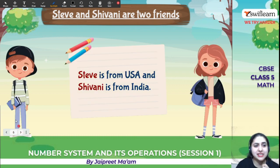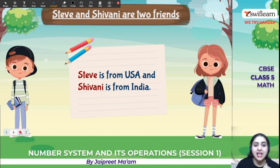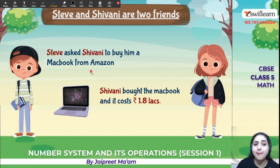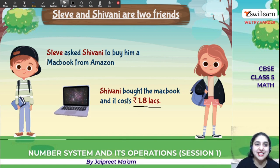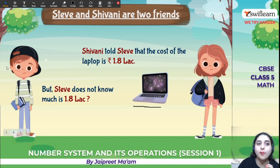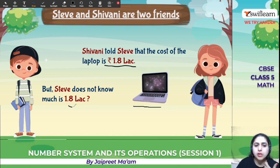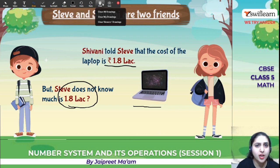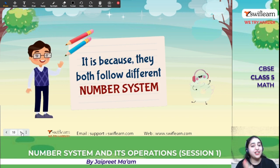There are two friends — Steve and Shivani. Steve is from USA and Shivani is from India. Steve asked Shivani to buy him a MacBook from Amazon. Shivani bought the MacBook and its cost is rupees 1.8 lakh. But Steve does not know what 1.8 lakh is. Why? Because they follow different number systems.